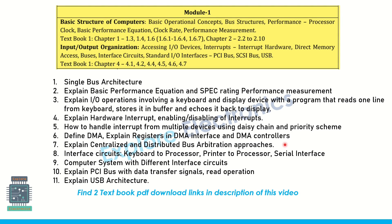Explain centralized and distributed bus arbitration approach — this is also important. Interface circuits like keyboard-to-processor interfacing, printer interface to processor, and serial interface can be asked. A computer system with different interface circuits can also be asked as a block diagram. Explain PCI bus with data transfer signals and read operation, how it happens in PCI bus — a timing diagram is also given in the textbook — and they may ask USB architecture.